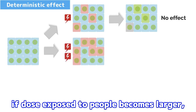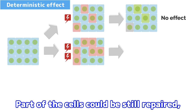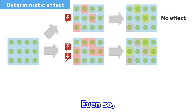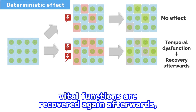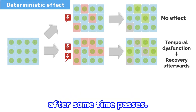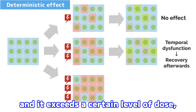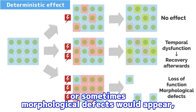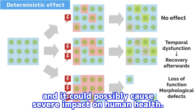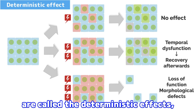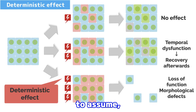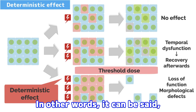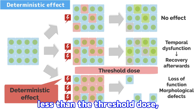If the dose exposed to people becomes larger, the number of impacted cells increases. Part of the cells could still be repaired, but the number of cells which are not completely repaired into original condition, or become dead, also increases. Even so, if a certain number of cells are kept intact, even if temporary dysfunction occurs, vital functions are recovered again after some time passes. If, however, the dose would further increase and exceed a certain level, through death or degeneration of a large number of cells, function of tissues or organs could be completely lost, or morphological defects would appear, possibly causing severe impact on human health. The negative effects which appear through this mechanism are called the deterministic effects, and the dose which serves as a rough indication of whether the deterministic effects would appear or not is called the threshold value, or threshold dose. In other words, if people are exposed to a dose less than the threshold dose, the deterministic effects would not appear.